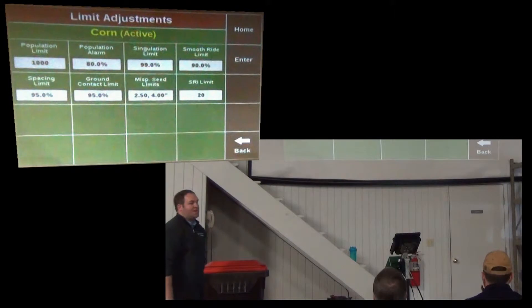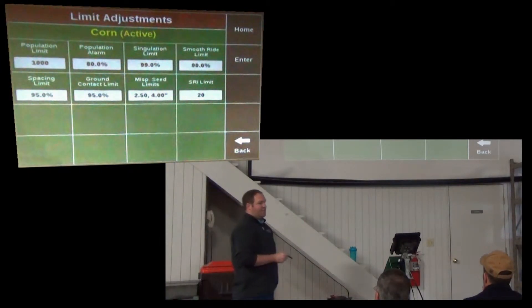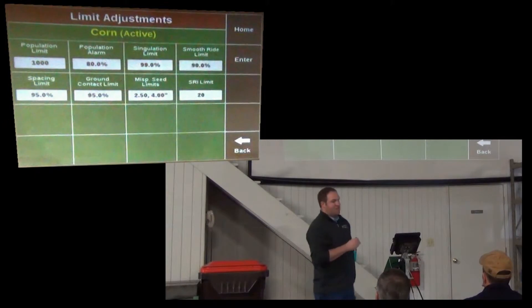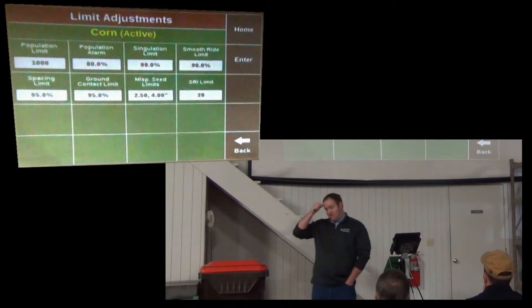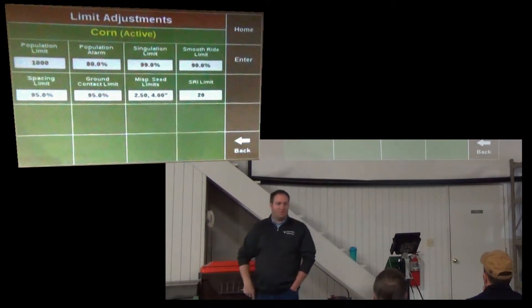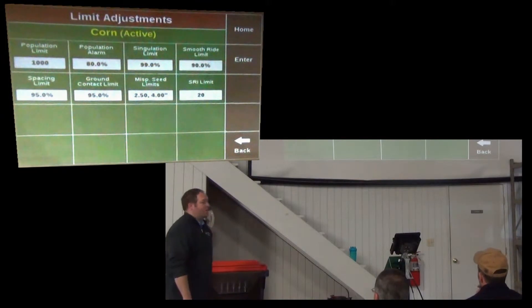The first thing is the population alarm. Population alarm defaults to 80%. So that means when you are planting 80% of your target, you're going to get an audible alarm. It's going to make a sound, whatever sound selection you have, indicating a row fail. In the same way, if you were planting 120% of your target, you're going to indicate a row fail as well.